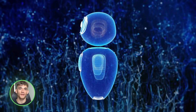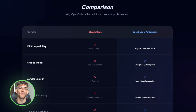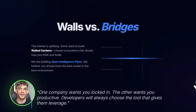Now let's talk about the comparison — Claude Code versus OpenCode plus anti-gravity. Editor freedom: Claude Code says no, OpenCode says yes. Subscription reuse: Claude Code says no, OpenCode says yes. Vendor lock-in: Claude Code is high, OpenCode is none. IDE experience: Claude Code is limited, OpenCode is full. Risk of access loss: Claude Code is high, OpenCode is low. The pattern is clear: one option gives you control, the other takes it away.